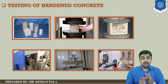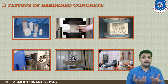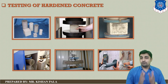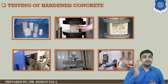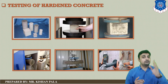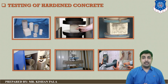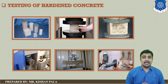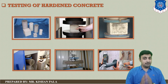You can see the pictures shown on your screen. We are using different types of specimens for finding these properties, like cubes and cylinders. We are using these specimens for finding compressive strength, tensile strength, and flexural strength of the concrete mass, using different sizes and shapes.